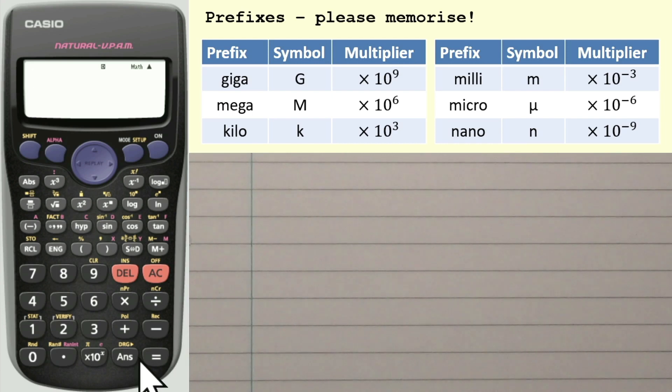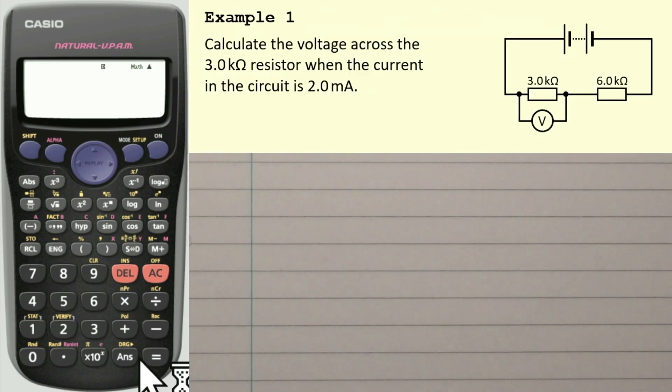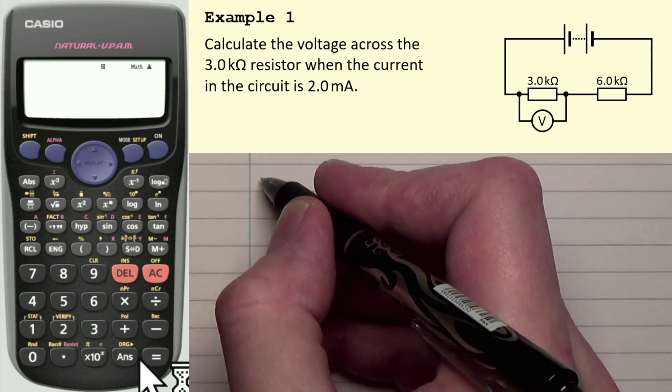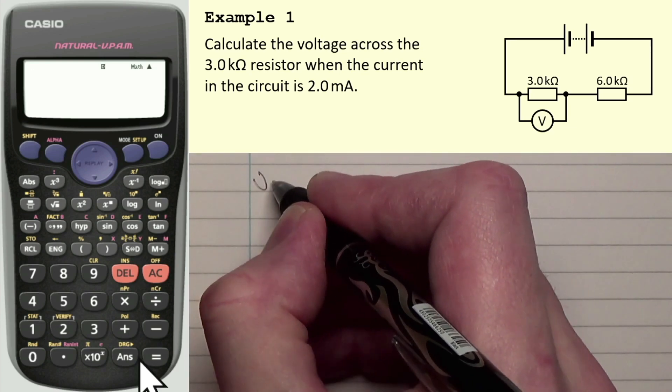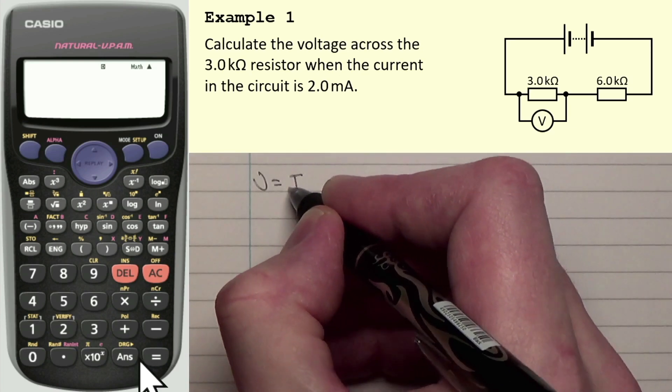Now, what I'm going to do is I'm going to do some example questions using these prefixes and show you how to actually enter them into your calculator. Here's the first one. The question says, calculate the voltage across the 3.0 kiloohm resistor when the current in the circuit is 2.0 milliamps. Don't worry too much if you don't know which equation to use. All we're interested in here is how to actually enter these two values into your calculator. It's actually Ohm's Law that we're using, and Ohm's Law is that V is equal to I times R.